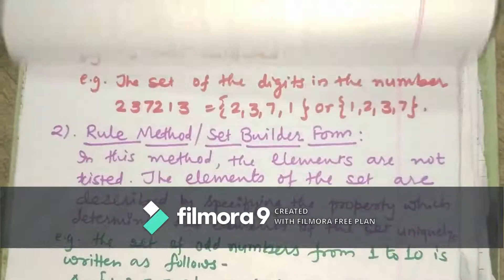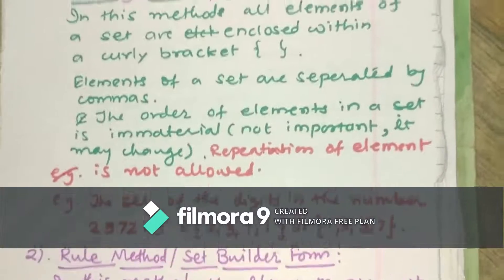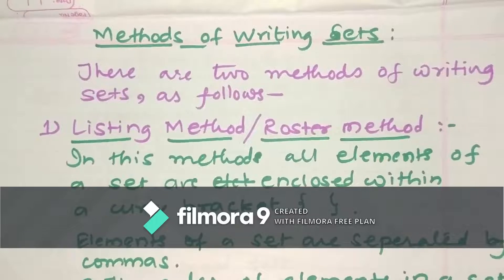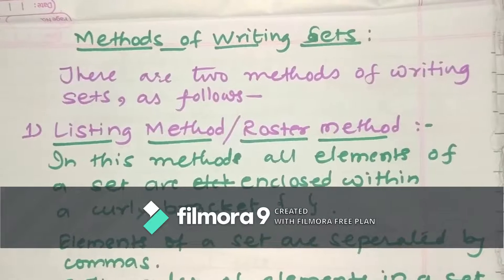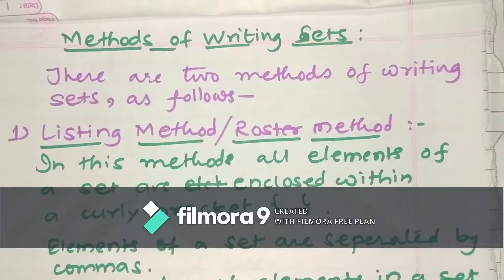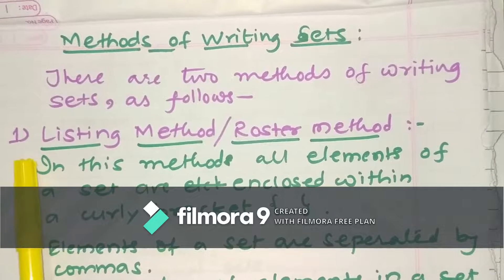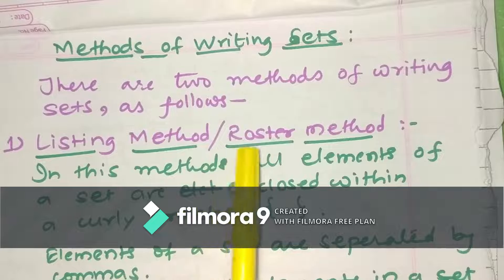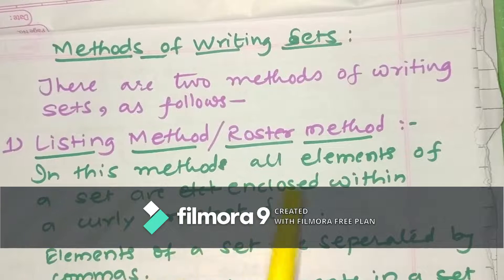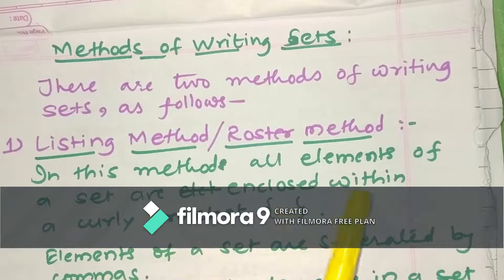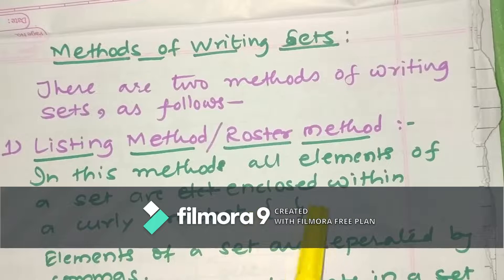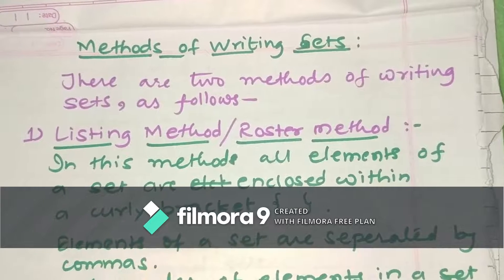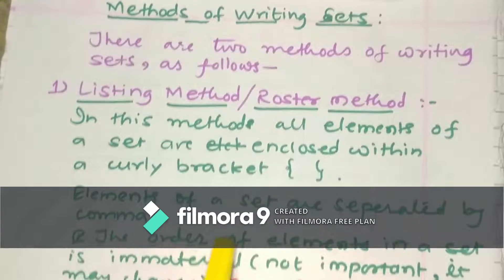Now let's see a few more concepts from set theory. One of the very important topics is the methods of writing a set. There are mainly two ways of expressing a set. The first one is known as the listing method or roster method. In this method, all elements of a set are enclosed within a curly bracket, and the elements are separated by commas.